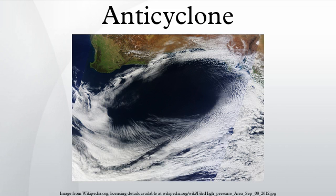Anticyclones aloft can form within warm core lows such as tropical cyclones, due to descending cool air from the backside of upper troughs such as polar highs, or from large-scale sinking such as the subtropical ridge.